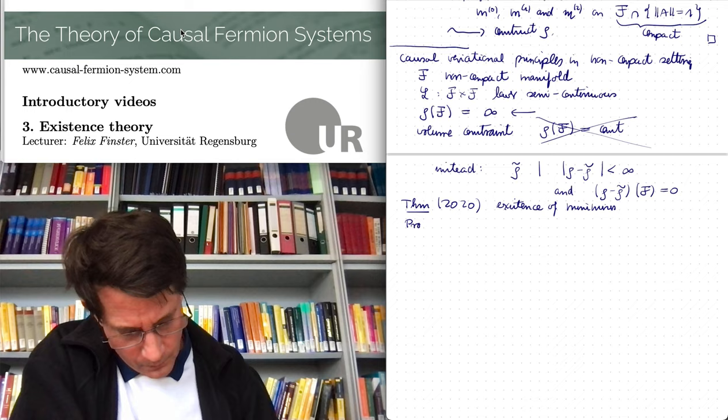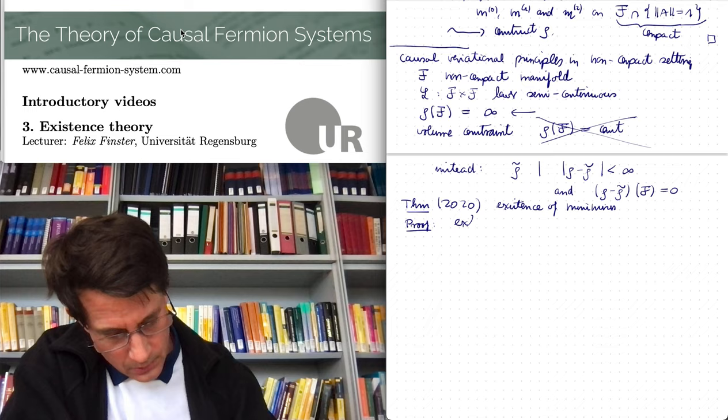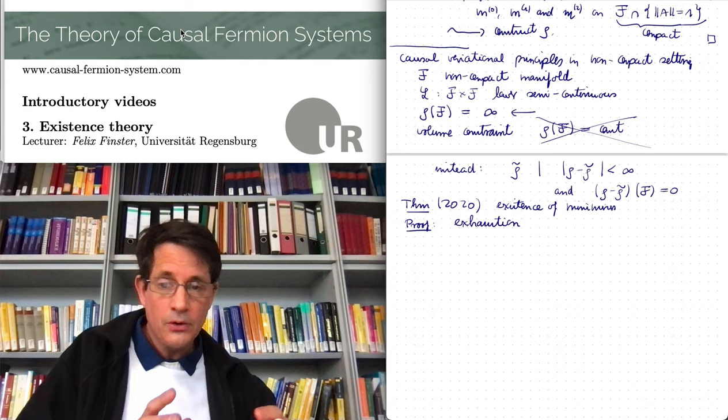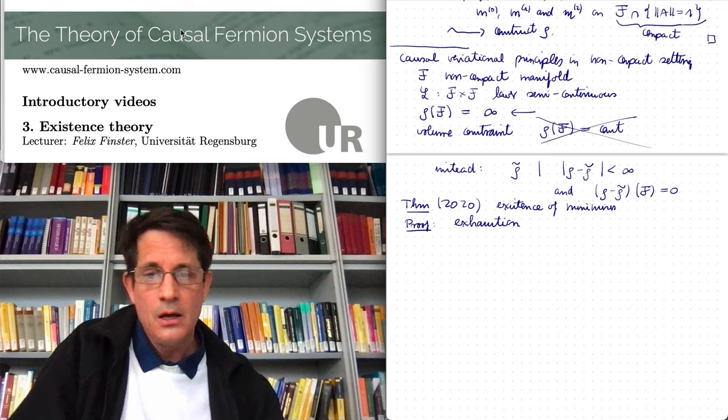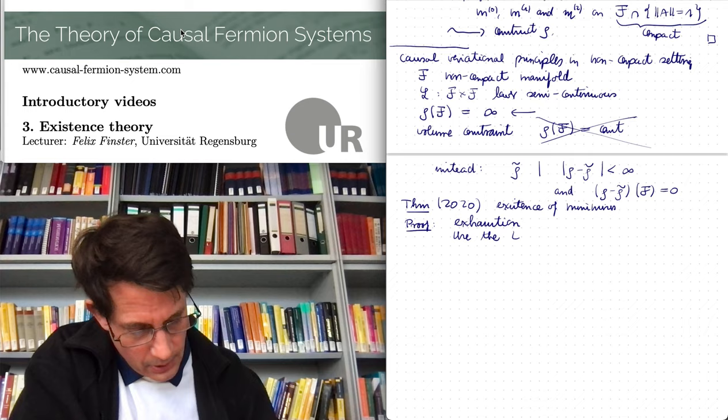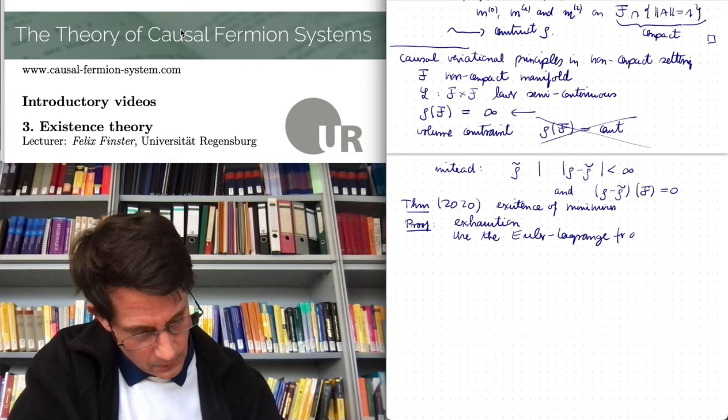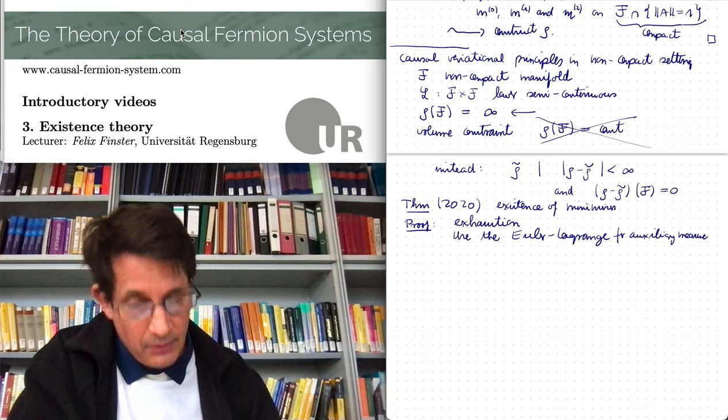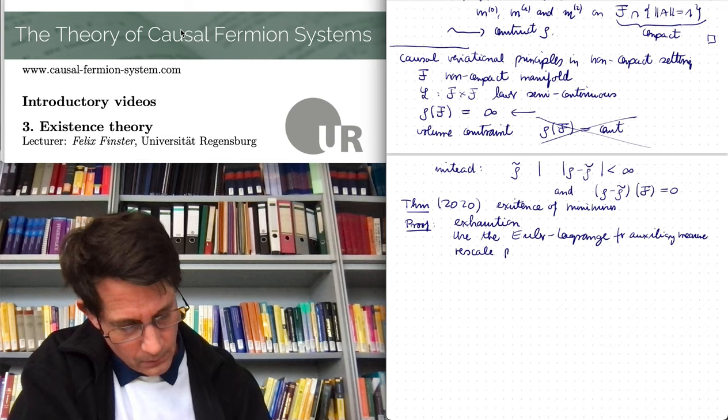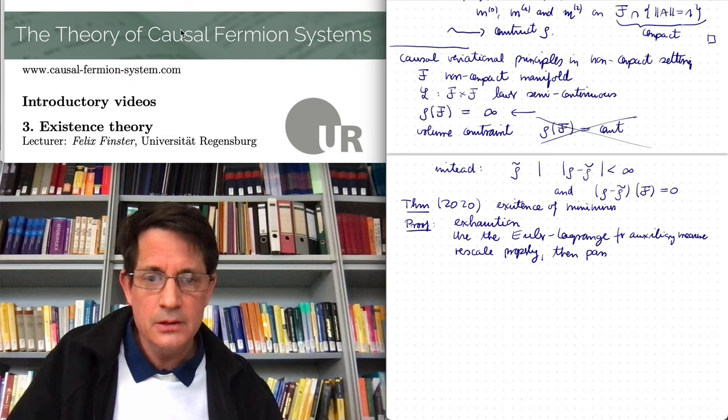Maybe one thing I wanted to mention here. The proof is kind of different because, well, first of all, we use kind of an exhaustion argument. So in other words, we exhaust curly F by a sequence of larger and larger compact sets. On each compact set, we have a minimizing measure. But then we also make use of the Euler-Lagrange equations. So we use the Euler-Lagrange equations for these kind of auxiliary measures. And then one has to kind of rescale things properly. And then one can pass to the limit. By pass to the limit, I mean through subsequences and so on.